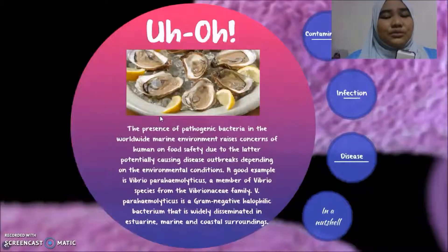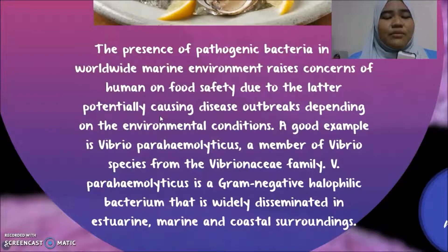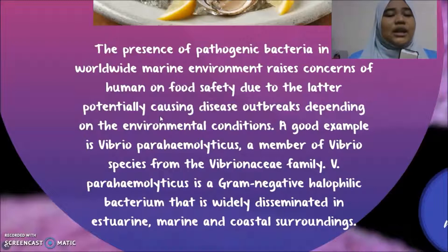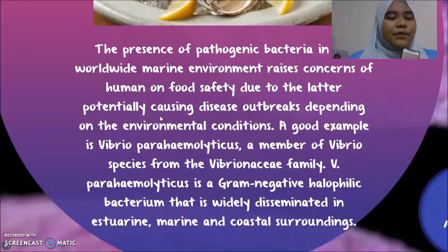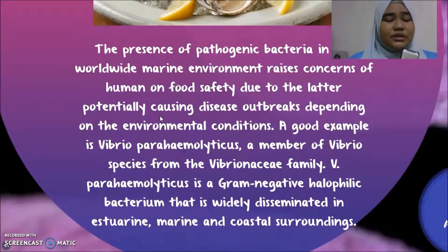Did you know the presence of pathogenic bacteria in the worldwide marine environment raises concerns about human food safety due to their potential for causing disease outbreaks depending on environmental conditions? A good example is Vibrio parahaemolyticus, a member of Vibrio species from the Vibrionaceae family. Vibrio parahaemolyticus is a gram-negative halophilic bacterium that is widely disseminated in estuarine, marine, and coastal surroundings.